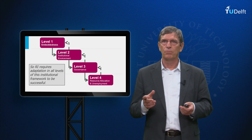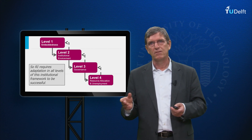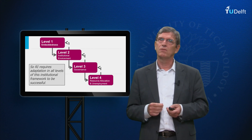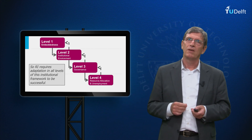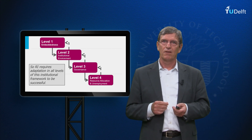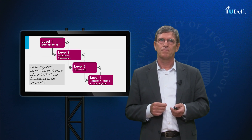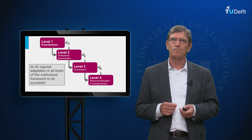So this interrelation between the different layers of institutions is very important when considering responsible innovation. It is not only a top-down activity, but as illustrated with the example of decentralized electricity production, there is also a bottom-up development — from individual users towards changes in governance, the institutional environment, and the embedded institutions and values. It is therefore very important to consider these different categories of institutions when analyzing responsible innovation. Thank you.